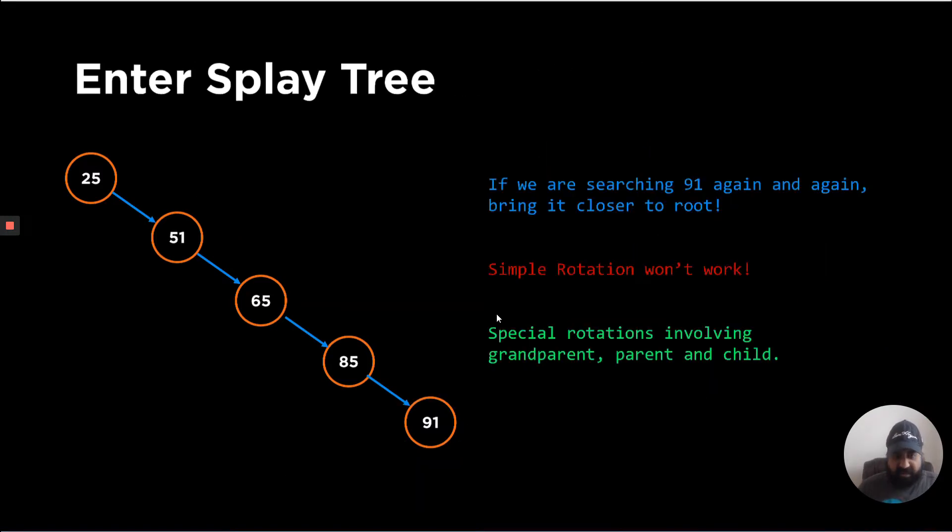The solution to this particular problem is solved using the splay tree. If we are trying to search this value 91 again and again, why don't we bring it closer? So one way to fix it is to rotate this tree using AVL tree terminology, using these tools of rotation. Like let's rotate this left, so 91 will be a bit further up, then further rotated, and it gets really complex.